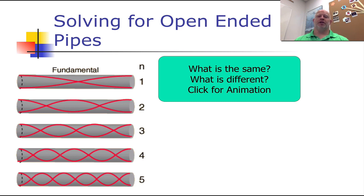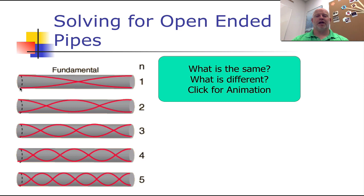Open-ended pipes are very much like strings in that we have a fundamental frequency and certain harmonics or overtones available. The smallest wavelength we can get for an open-ended to open-ended pipe scenario is one half of a wavelength. You have a trough going up to a crest — this is still one half of a wavelength. You need to have one node in the middle because your ends are at a free boundary, so the ends have to be open.